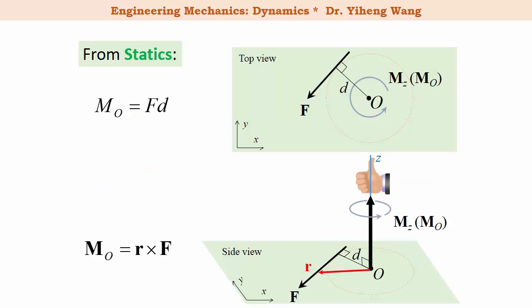If you remember when we learned about the moment of a force back in statics, the moment is the rotational effect caused by the force about a reference point, or rather an axis that passes through this reference point. In scalar form, the moment is calculated by the magnitude of the force multiplied by the moment arm, which is the perpendicular distance from the reference point to the line of action of the force.